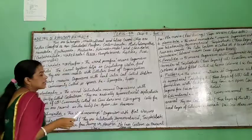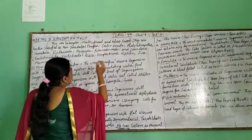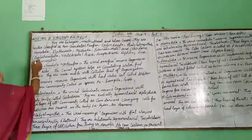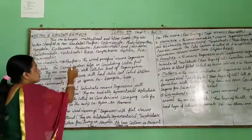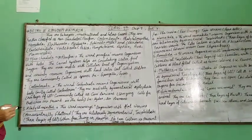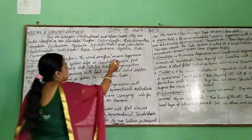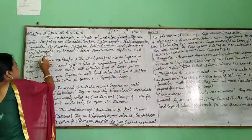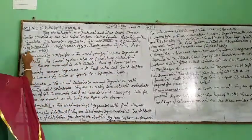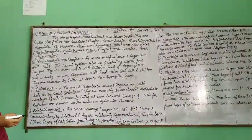In non-chordate, some phyla are involved: Porifera, Cnidaria, Platyhelminthes, Nematoda, Arthropoda, Mollusca, and Echinodermata — these seven phyla are involved. In chordate: Protochordata, Vertebrata, Pisces, Amphibians, Reptiles, Aves, and Mammalia. These are the phyla related to animals.